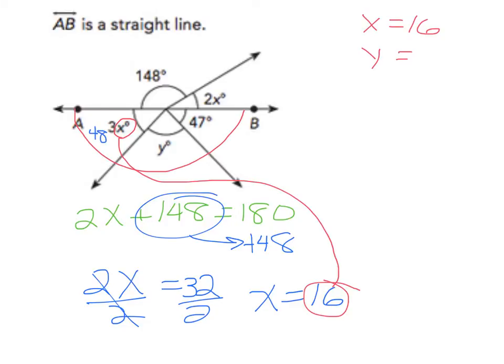So this is 48, this specific angle right here. Instead of 3x, it is 48. So we would say 48 plus 47, we're going to add those two together. We get 95, so 95 plus y equals 180. From here, take your 95 over and subtract. Y is going to equal 85.